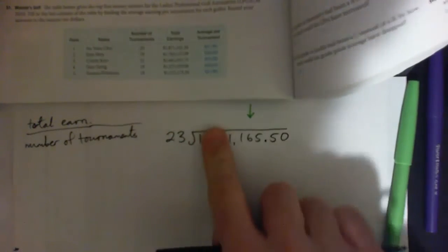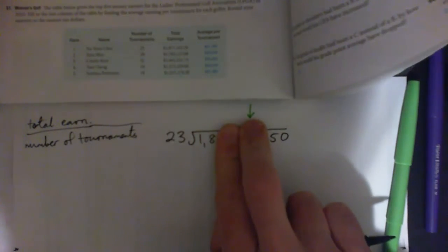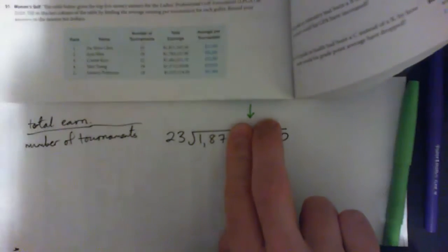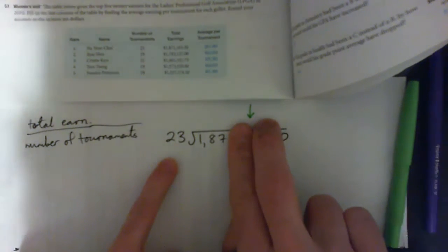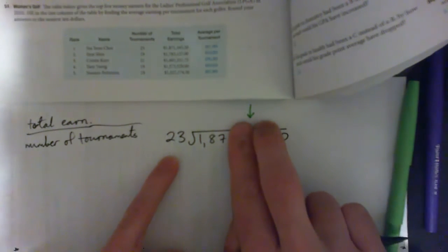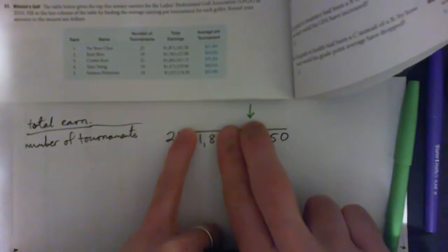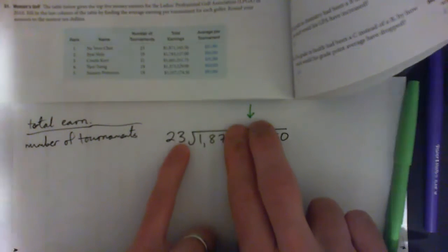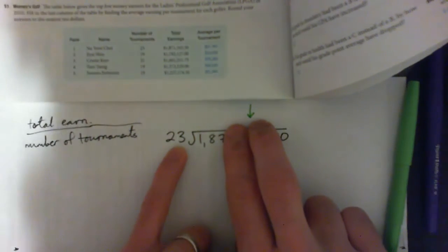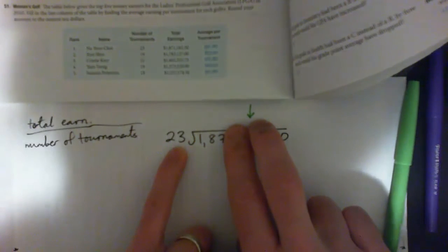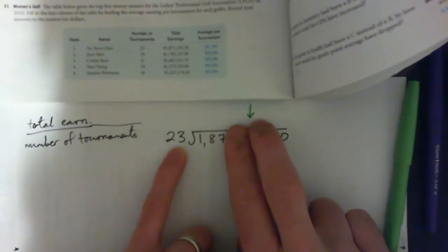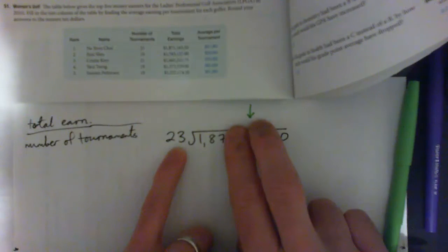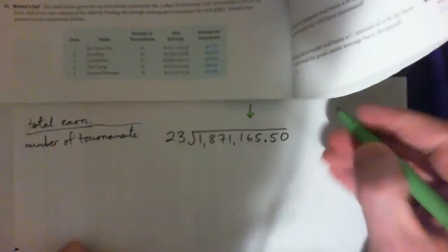So 23 into 1 won't go, 23 into 18 won't go, 23 into 187. So I'm going to do a little trick here. I'm going to think, okay, I don't know my 23 times tables but I do know my twos and 2 into 18 is nine times. So is it nine? Well, 10 23s is 230, so nine of them would be 200 something as well. So I'm going to try eight. I'm just going to guess eight.